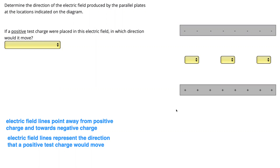And in this one, again, we're labeling the electric field lines. We know they point away from positive towards negative. So in this example, they're going to be all going upwards — away from the positive plate and up towards the negative plate. For the direction that a positive test charge would move, it moves in the same direction as the field lines, so it's going to be going upwards. It's attracted to the opposite charged plate — the negative plate up top — moving up, and repelled from the positively charged plate at the bottom, again making it move upwards.